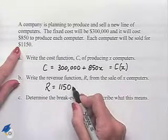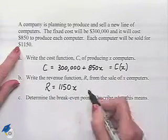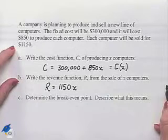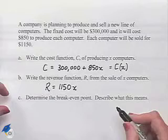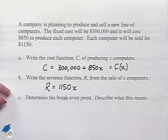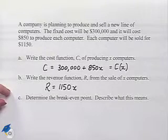So our revenue function R is going to be $1,150 being multiplied times the number of computers that we end up producing, which is x. Part C: Determine the break-even point, then describe what this means.